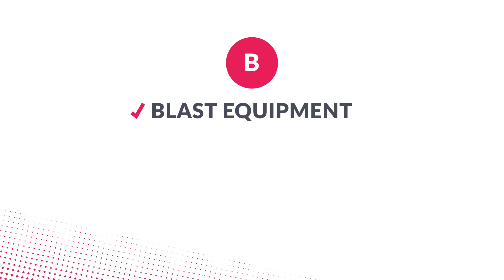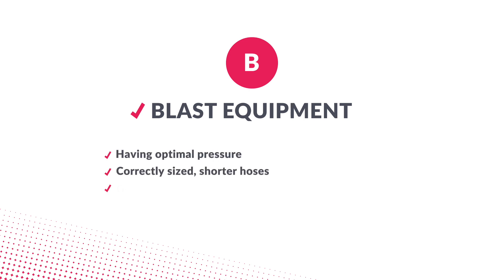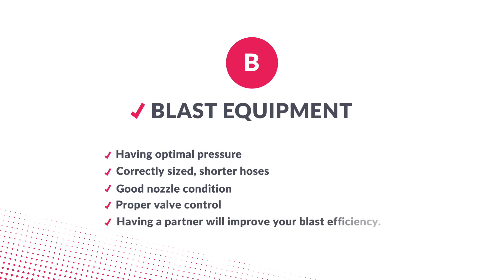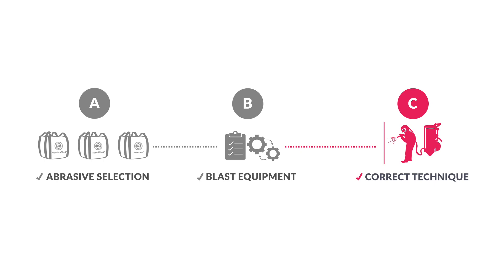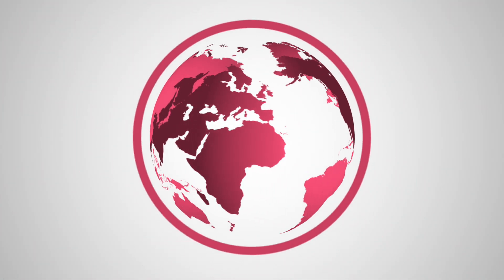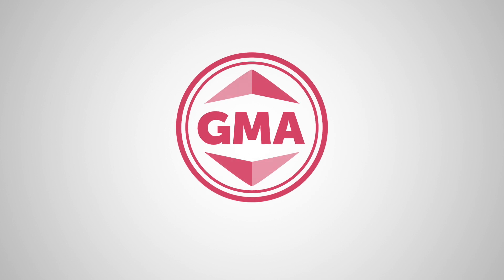In this video, we explained how blasting equipment can affect the overall efficiency of your blast operation. Having optimal pressure, correctly sized shorter hoses, good nozzle condition, proper valve control, and having a partner to adjust the abrasive metering will improve your blast efficiency. In the next video, Part C demonstrates how having the correct technique can help achieve an optimal blast performance. Optimizing blast performance can be as easy as ABC: selecting the right garnet abrasive, blast equipment, and ensuring the correct blast technique will help you perform an efficient and effective blast operation. GMA — more than just garnet.